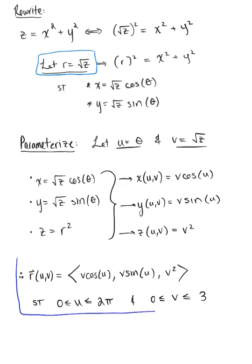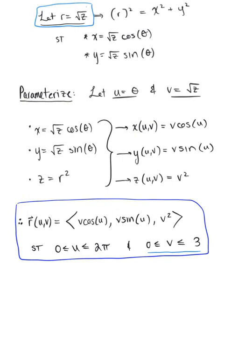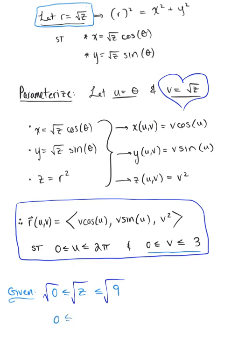This is our parametric description for the provided paraboloid. Keep in mind this is not an exclusive solution — there are other ways to parameterize this, so this is just one possible way. As for where the bounds came from: we were given z is greater than or equal to 0 and less than or equal to 9, and since v is defined as the square root of z, we take the square root of each part of the inequality. Since z is non-negative, we get v is greater than or equal to 0 and less than or equal to 3.